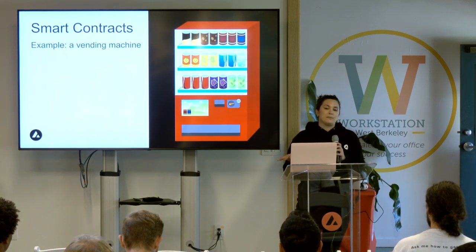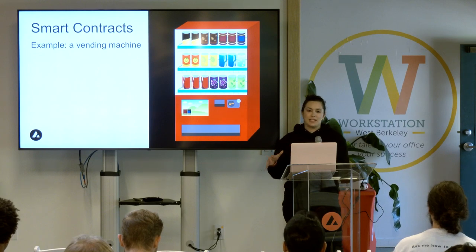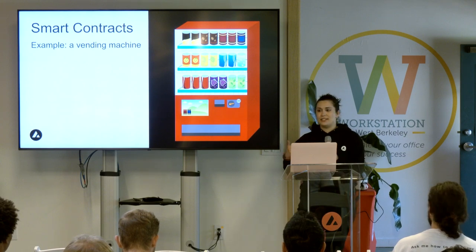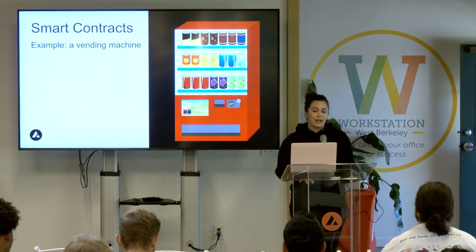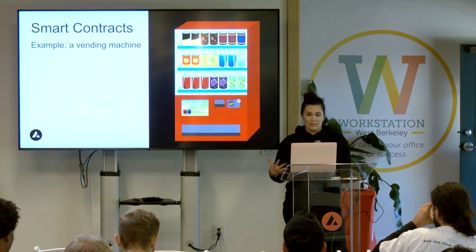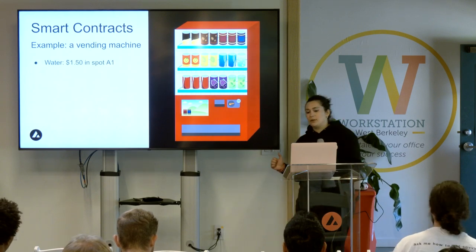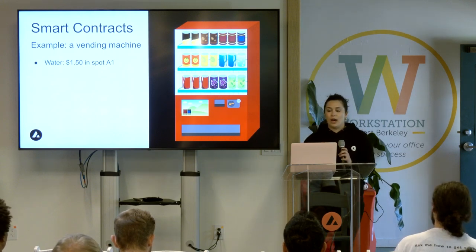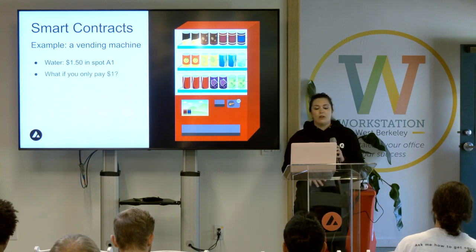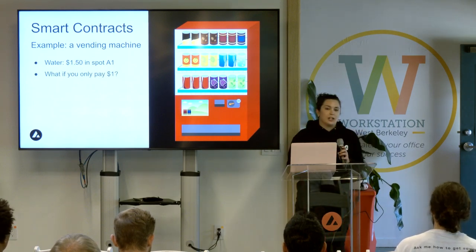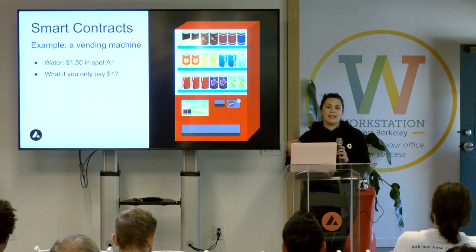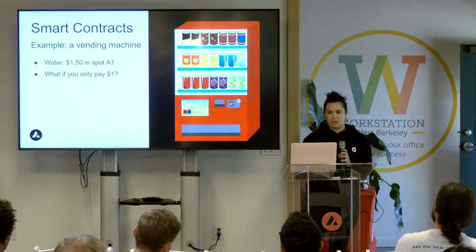One of the very basic comparisons I like to make when talking about smart contracts is a vending machine. You don't have to walk up to a cash register, deal with a cashier, and exchange money with them. You give it your money and it will give you the item that you are looking for. Say you want the can of water that's in there, and that water is $1.50 and it is in spot A1 of the vending machine. What happens if you only give it a dollar? You put a dollar in the machine and you hit A1 — it's not going to dispense that water to you because you haven't met all of the conditions that need to be in place to execute this transaction.